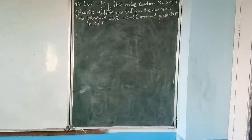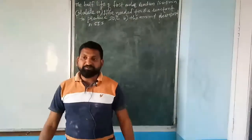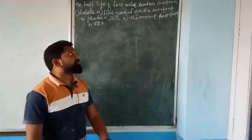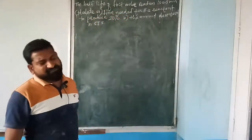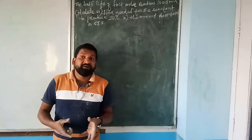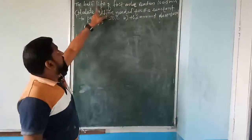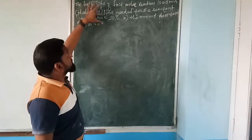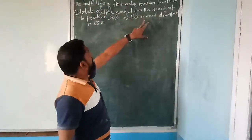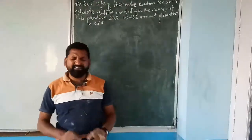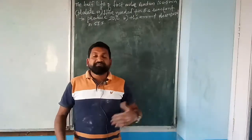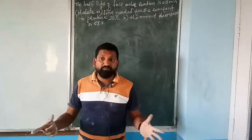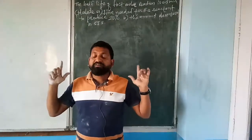This problem is already given in your textbook. The half-life of a first order reaction is 0.5 minutes. Calculate: (i) the time needed for the reactant to produce 20%, and (ii) the amount decomposed in 55 seconds. This is a very simple and nice problem — if you can solve this type, you'll be able to handle all chemical kinetics numericals.